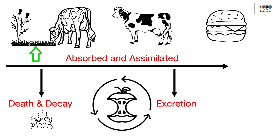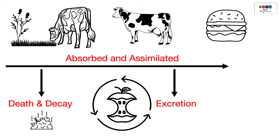Plants get their nitrogen by absorbing nitrates through their roots, and they use these nitrates to make proteins and nucleic acids. Animals like a cow get their protein by eating plants, so nitrogen is passed down the food chain. When we eat a burger, we're getting nitrogen from the animal or its products — dairy and meat — or we can eat plants that contain nitrogen.